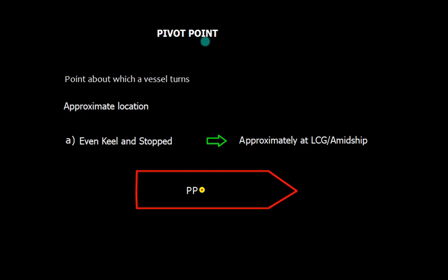Let's talk about pivot point. This is the point about which a vessel turns. What we are going to discuss here is the approximate location of pivot point because we should have some idea where the pivot point is. We don't need to know the exact location of pivot point.